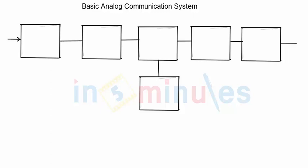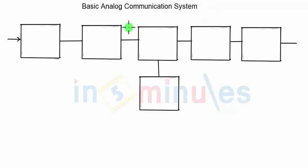Welcome to 'In 5 Minutes.' In this video clip we will discuss a basic analog communication system — specifically the block diagram of the communication system. The information signal or message which we want to transmit to the receiver side is analog in nature. When the data to be transmitted is digital in nature, it becomes a digital communication system.